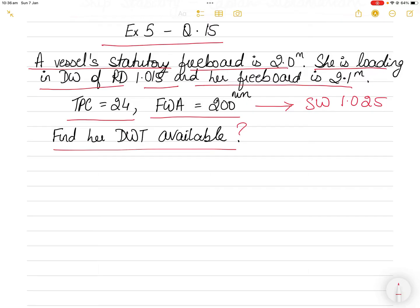These things are not mentioned in the question; you are expected to understand them. Statutory freeboard is your summer freeboard in seawater at relative density 1.025. This means that currently your vessel is in dock water.